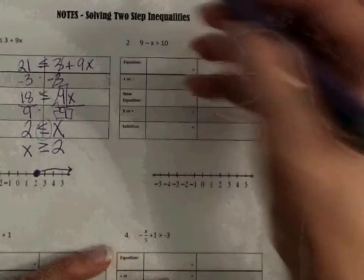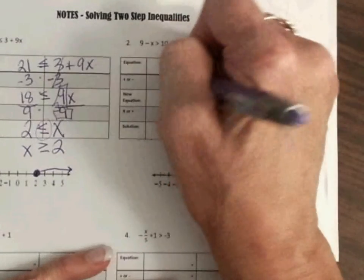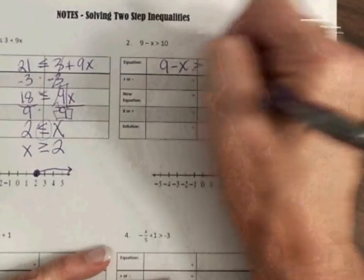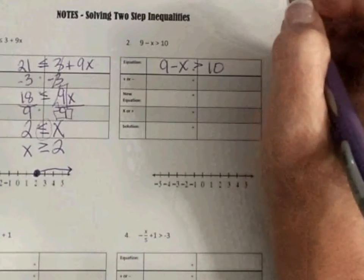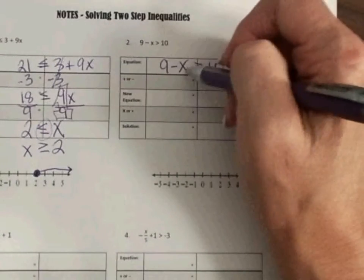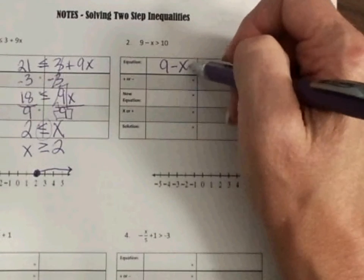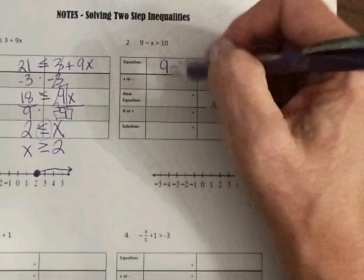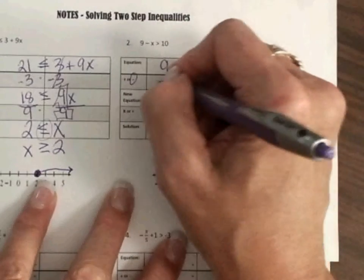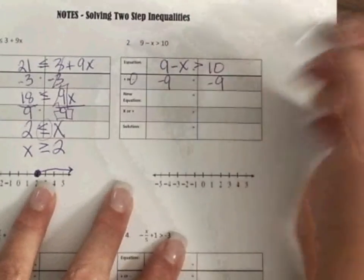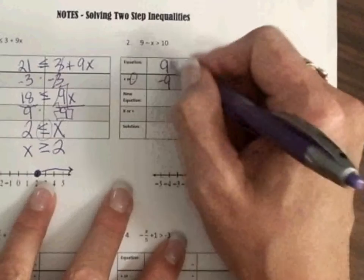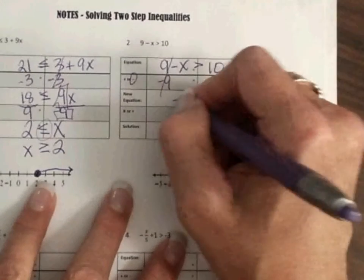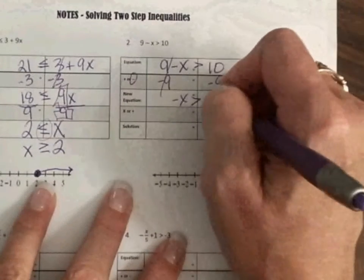Okay. Our second example. We have 9 minus x is greater than 10. So we want to get this x by itself. So in order to get this x by itself, we need to get rid of this 9. They added, so we're going to subtract 9 from both sides. All we have left, these zero out, negative x is greater than 1.